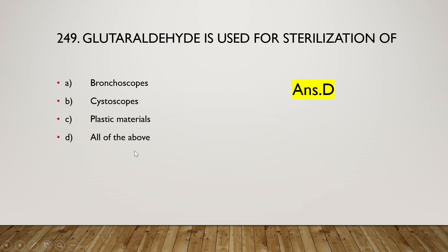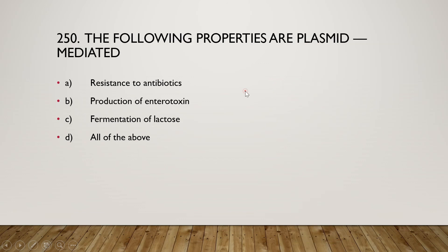Next question: glutaraldehyde is used for sterilization of bronchoscopes, cystoscopes, plastic material, or all of the above? The right answer is option D — all of the above. The last question: the following properties are plasmid-mediated — resistance to antibiotics, production of enterotoxin, fermentation of lactose, or all of the above? The right answer is option D — all of the above are properties of plasmid-mediated functions. Thank you for watching this video.